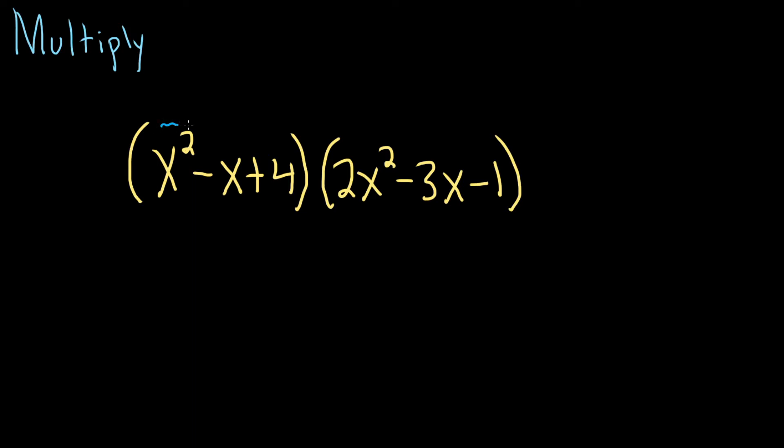We're going to take this x squared and multiply it by each of these terms, then do the same thing with negative x and then with 4. So let's jump into it.